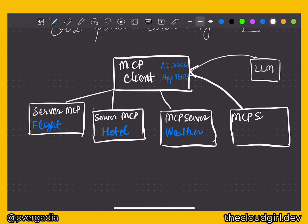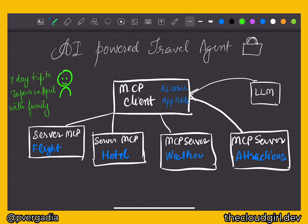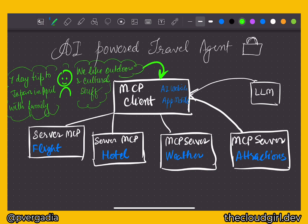Another MCP server helps look at attractions and activities in the database. A user asks the AI-powered application for a seven-day trip to Japan in April with family — they like outdoor and cultural things. That request goes into the client, which assesses it, connects to the LLM, and sends the information to the large language model for processing. The client also connects to the MCP servers to confirm they are responding. The LLM assesses the information and determines it needs flights, hotels, weather, and attraction-related details.